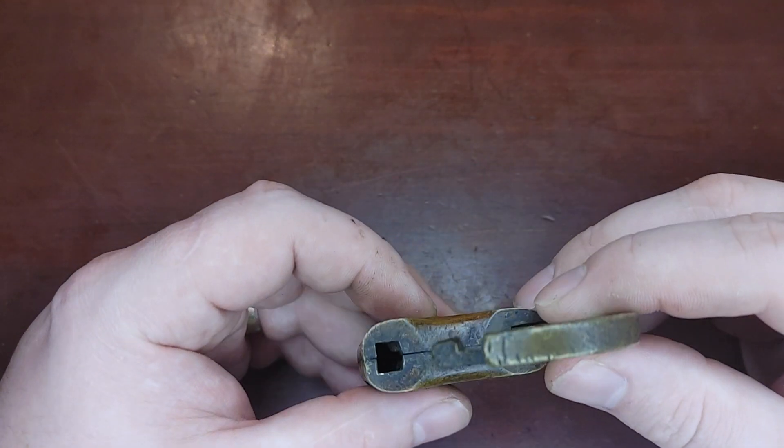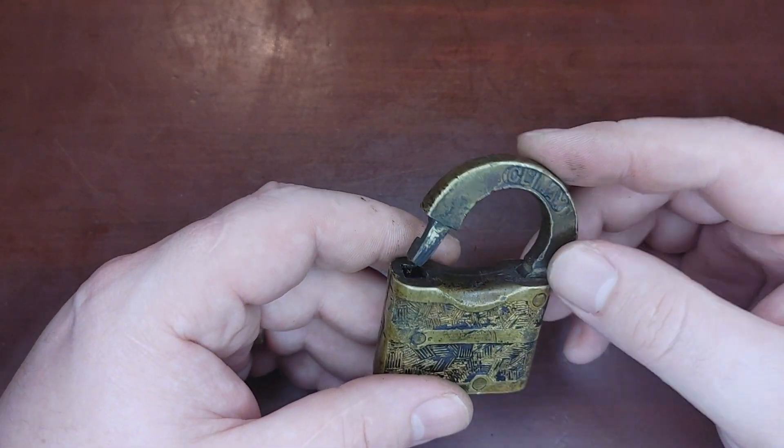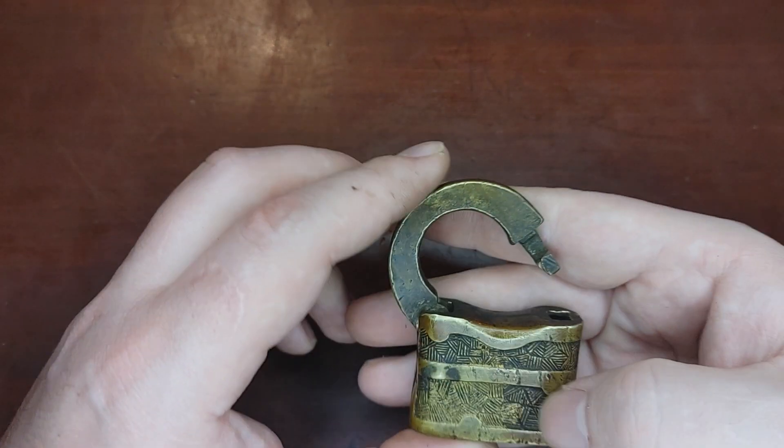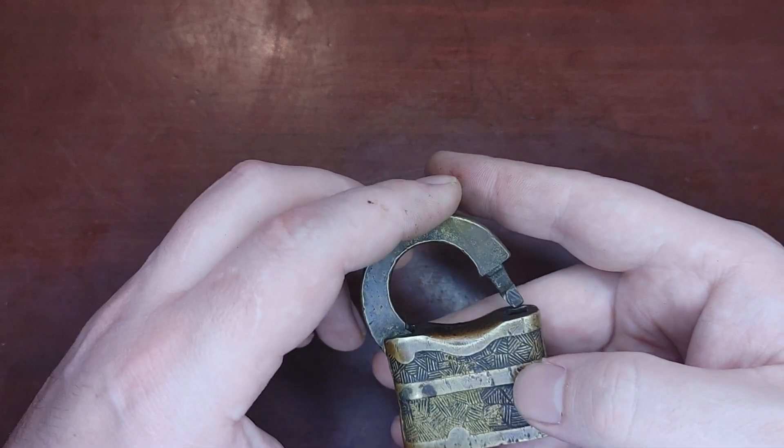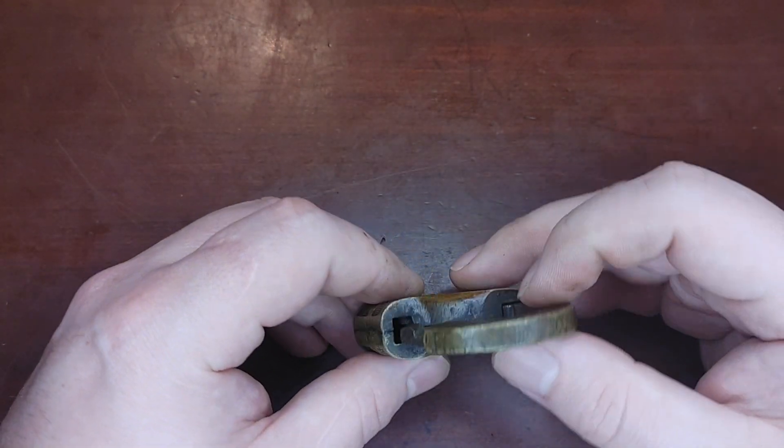I'm guessing this is like early, I don't know, maybe 1900s to 1930s. It reminds me of the revenue locks I've got that would have been from around the prohibition era, so I think it's probably from around that time as well.